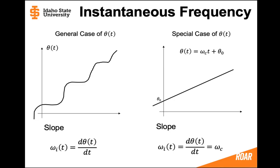But on graph 2 we can see that because it's a line, the slope is going to be the carrier frequency ωc. And so it's just going to have the same instantaneous frequency no matter what the time is.